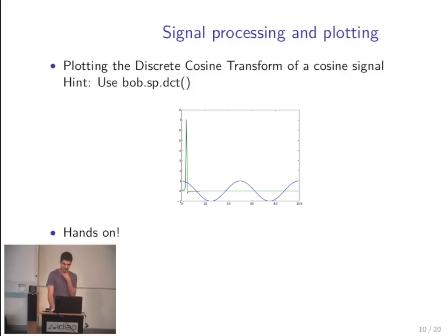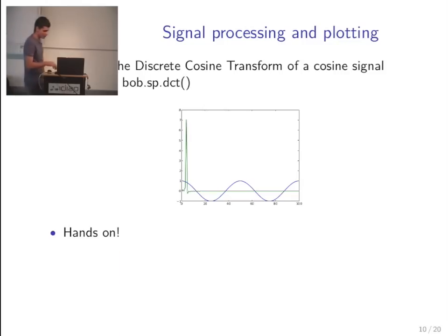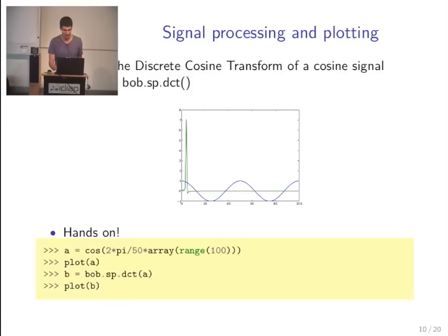Here bob.sp is for signal processing. We also have bob.ap for audio processing, which contains MFCC feature extraction, and bob.ip where we have image feature extractors like LBP, SIFT, etc. The solution, if using IPython with the pylab option, is very simple: generate the cosine signal, plot it, then apply the Bob DCT function and plot the output. The key idea is that everything within Bob uses NumPy ndarray — you process it and it always returns ndarrays.